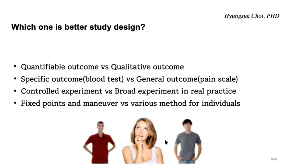And fixed points and maneuver in an acupuncture study versus various methods for individuals. This is a controlled environment. Researchers should use the same point for all subjects — that makes it objective and reproducible. What is the virtue of an experiment? It should be reproducible. But the latter option — various methods for individuals — looks better for the patient, but I don't think it is a good idea for research.